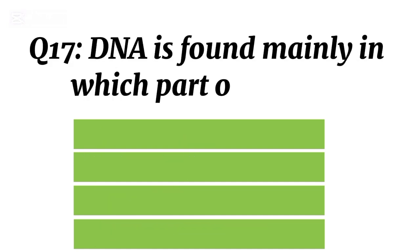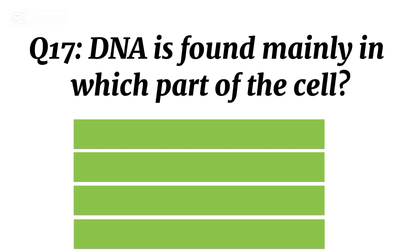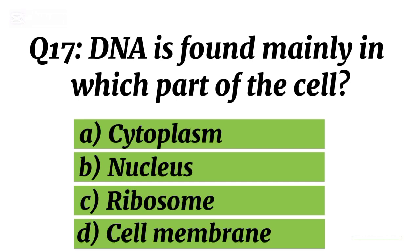Question 17. DNA is found mainly in which part of the cell? Correct option B. Nucleus.